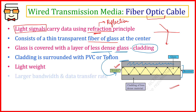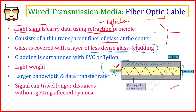Fiber optic cable is very lightweight compared to the copper wires in twisted pair and coaxial cables. The bandwidth and data transfer speed are also very high because light is being used, and the signal travels much longer distances without being affected by noise. This is why fiber optics is now being used for internet connectivity — such as Jio Fiber and Airtel Fiber — offering faster internet.